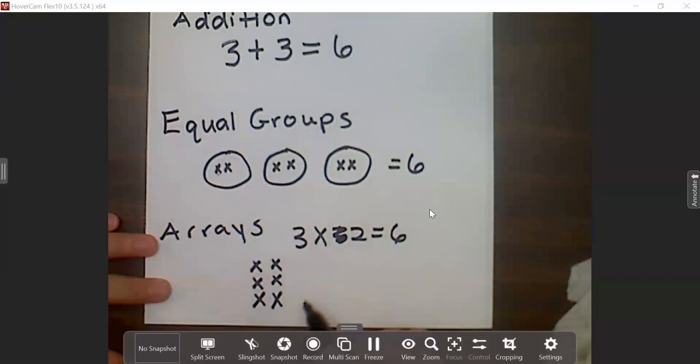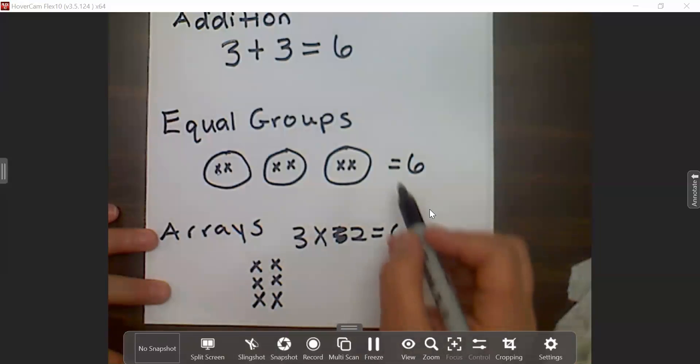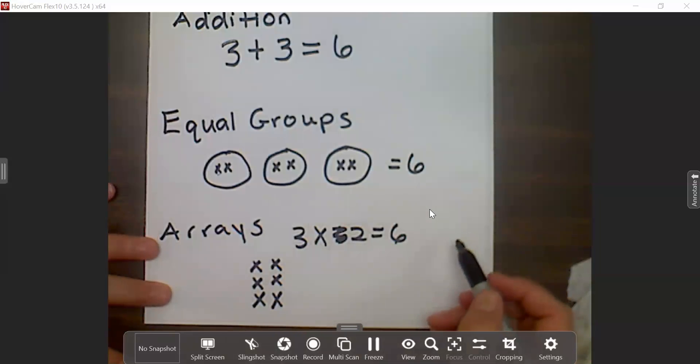So once they have drawn the array, students can count the X's and they get the product six. These are some simple strategies students can use while they are starting to memorize their multiplication facts.